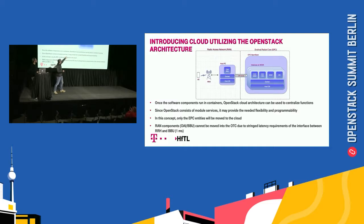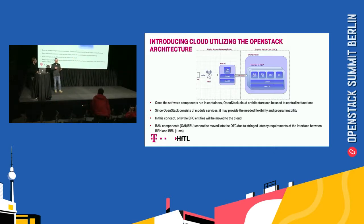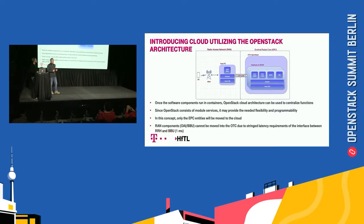The first benefit is that all the components in the OpenAir interface that now run on the OpenTelecom Cloud can be managed centrally. Just imagine in the future we need some more capabilities in the LTE network — we do this just by pushing a button when we boot some more EPC core network nodes. So we can increase the capabilities of the network.